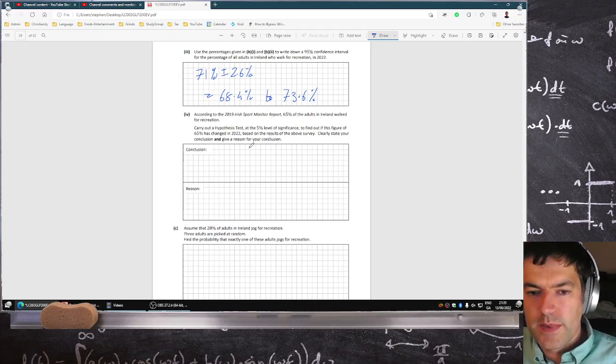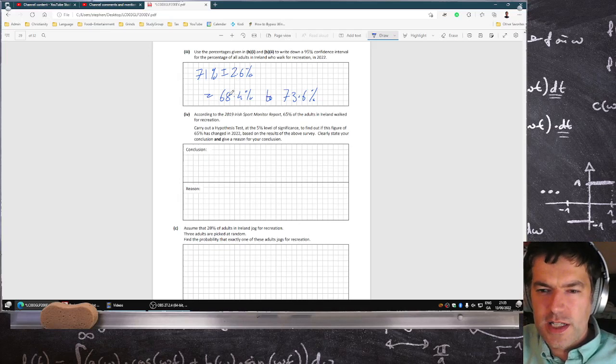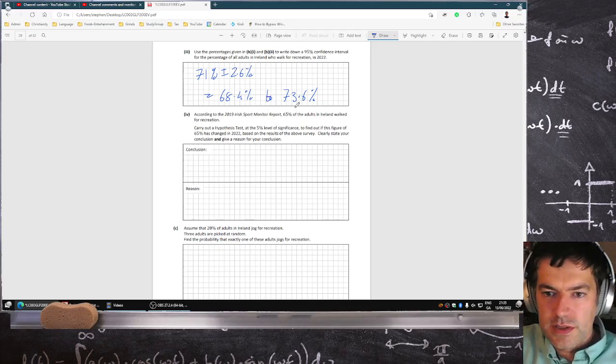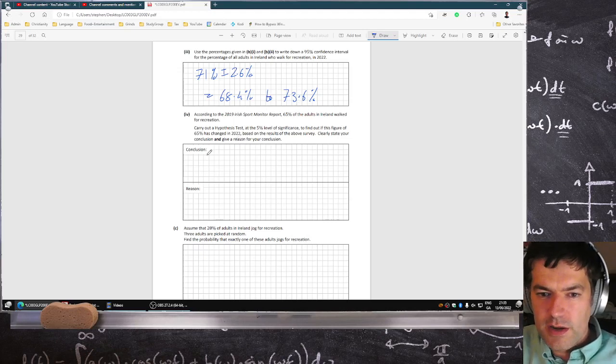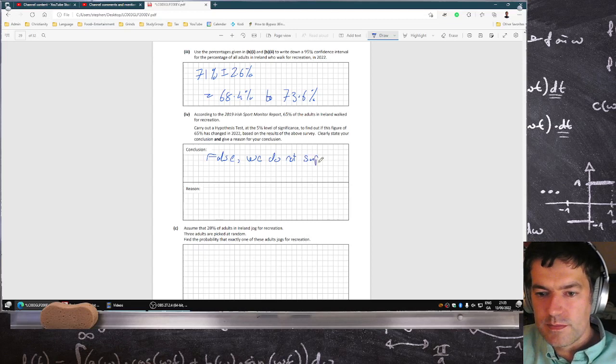But our confidence interval is 68.4% to 73.6%, so I would conclude that this is false and we do not support the claim that 65% walk. The reason is because 65% is not in the confidence interval.